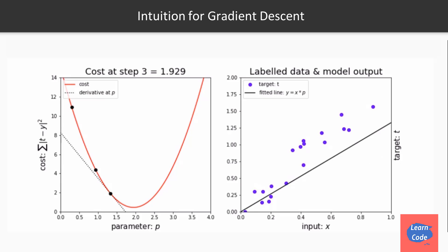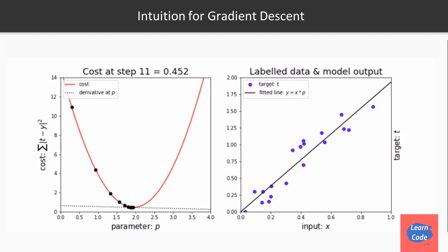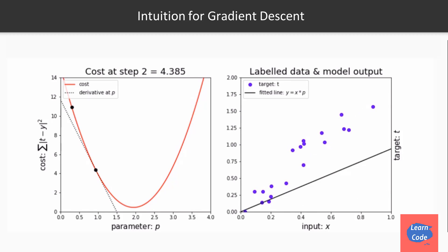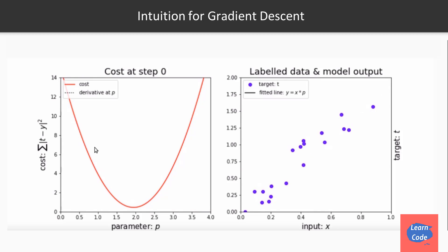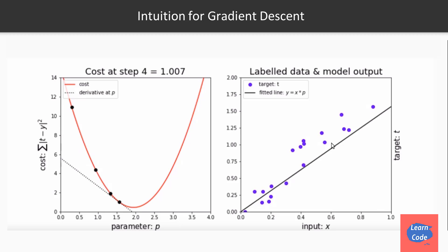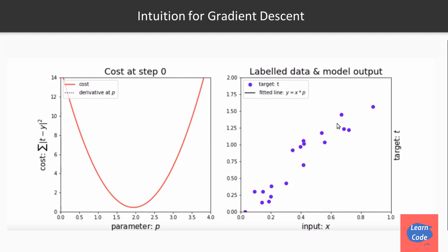Now let's understand the intuition behind gradient descent. To do that, we'll use these two graphs, which are based on code by Peter Roland. The first graph represents the cost function, and the second graph represents the data between x and y and how the line is fitting on that data.